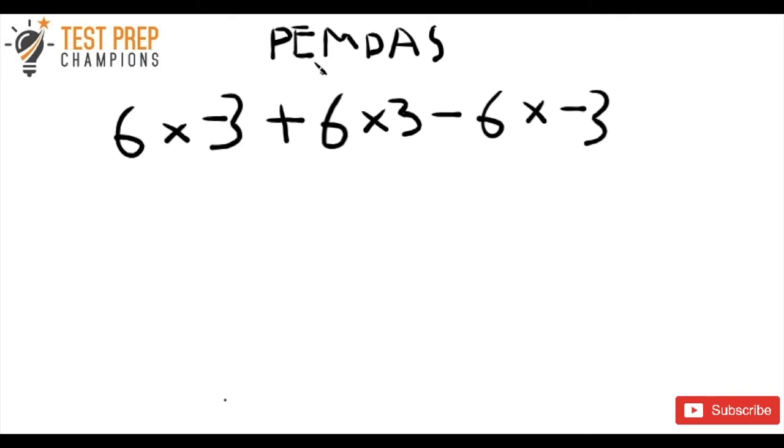So for this question, the most relevant are going to be the M, which is multiplication, and addition, which is the A. Since M comes before A, that means we want to multiply before we do addition or subtraction, which is also relevant.